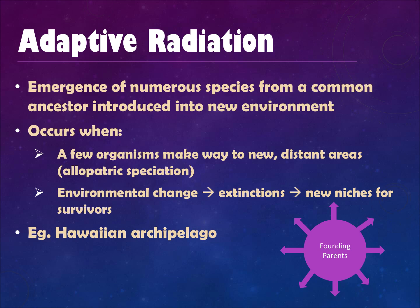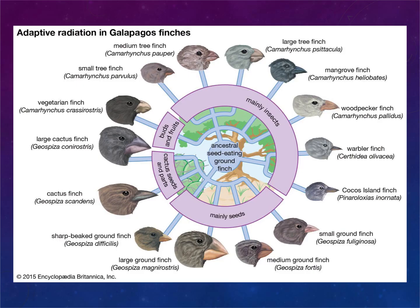Adaptive radiation is where many new species come from a single ancestor — shaped like a wheel or spokes. This occurs when a few organisms reach a new distinct area, a type of allopatric speciation. Environmental change can lead to extinction and open new niches for new organisms. Hawaii and Darwin's Galapagos finches are classic examples: a whole range of new finch species arose from the original ancestral finch, each evolving a different beak based on the food available on each island.